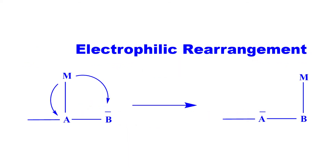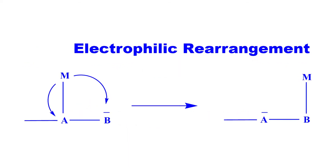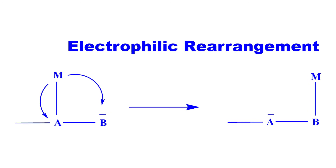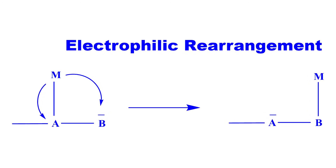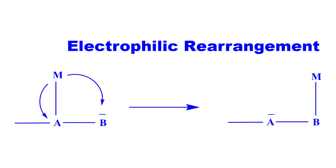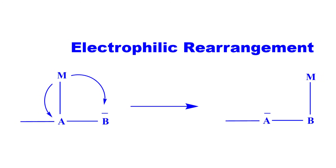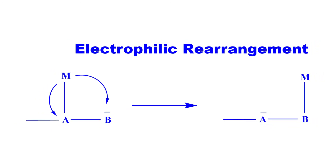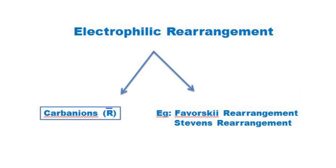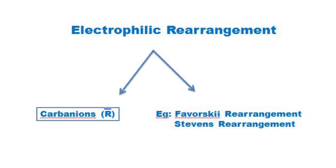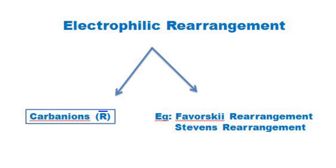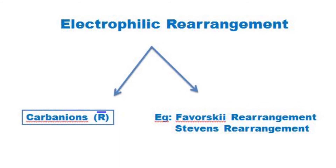The second classification is the electrophilic rearrangement. Rearrangement reactions in which the migrating group migrates without its electron pair to electron-rich atoms are called electrophilic rearrangements. Some examples for this rearrangement are Favorskii rearrangement and Stevens rearrangement.